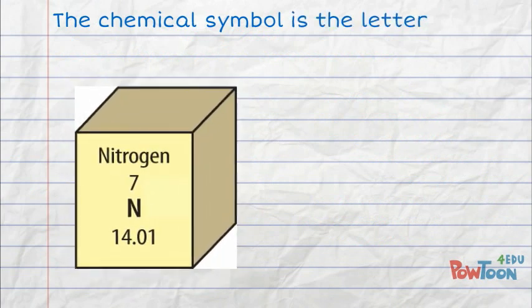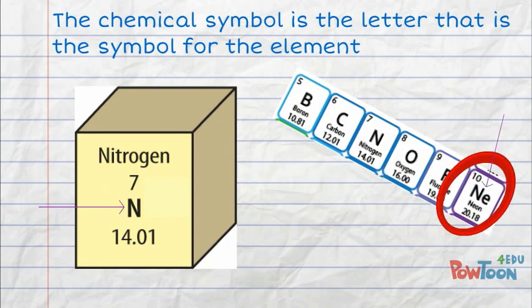The chemical symbol is the letter that is the symbol for the element. Sometimes the chemical symbol is more than one letter.